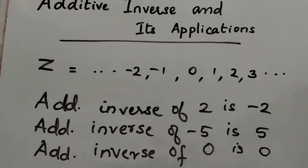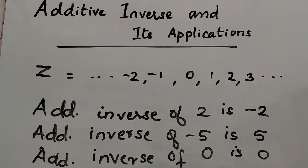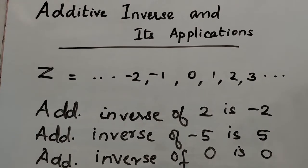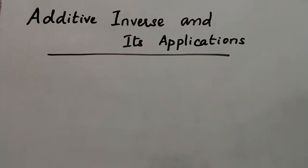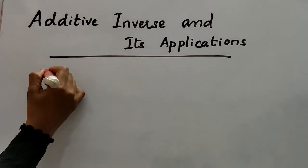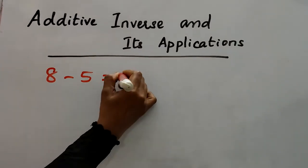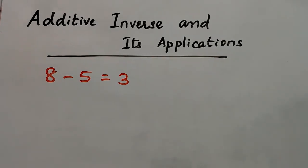So, the additive inverse of any integer is its corresponding opposite integer. Now let's learn how to subtract two integers with the help of an example. We know that 8 minus 5 equals 3.